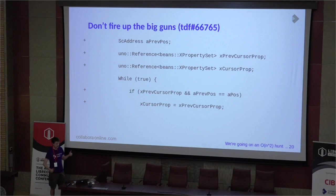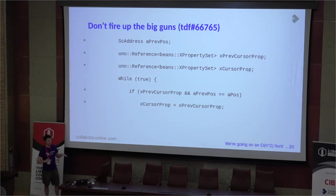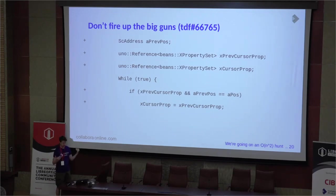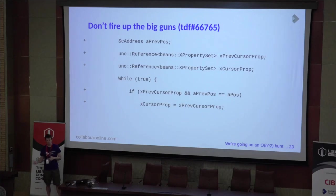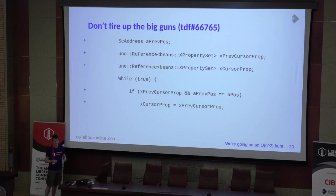In this particular case, we were loading a large document and computing style information, firing up some EditEngine infrastructure to do that. EditEngine is a decent piece of infrastructure most of the time, but it's quite heavyweight. After looking at this for a while, it became fairly obvious that because this was a spreadsheet, almost all of the cells in a given column shared the same style information, so we didn't need to keep recomputing it. I stuck in a one-element cache: as we run through the loop, we just check whether the current cell shares the same style information as the previous cell, and if it does, we skip recomputing. We went from five minutes to about two seconds.